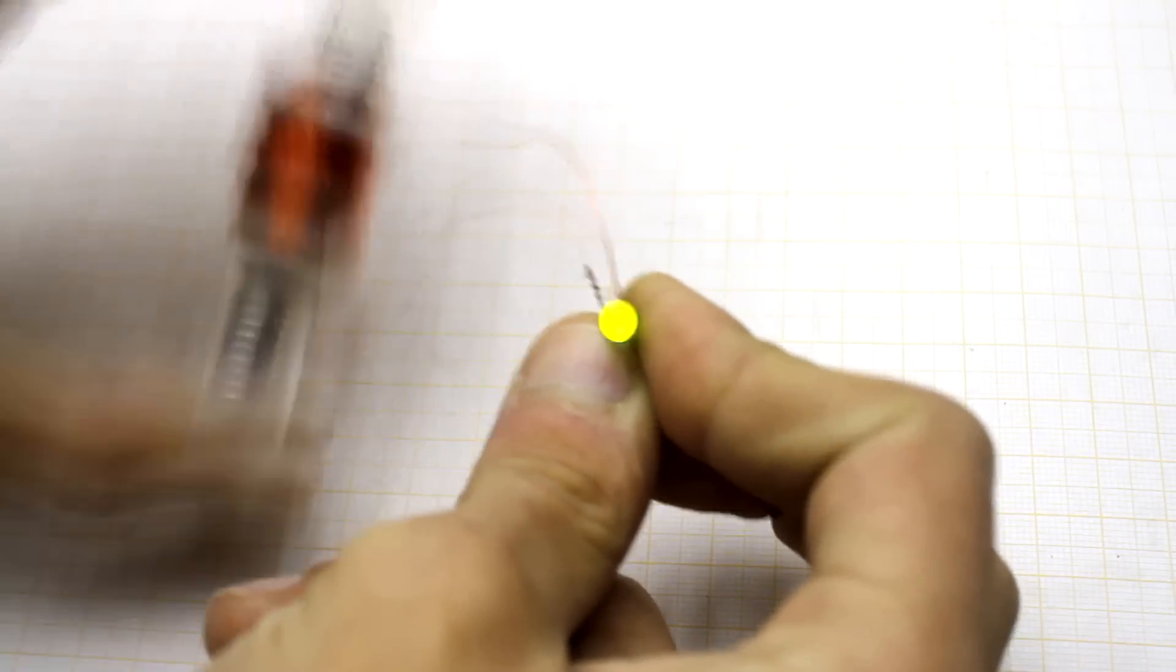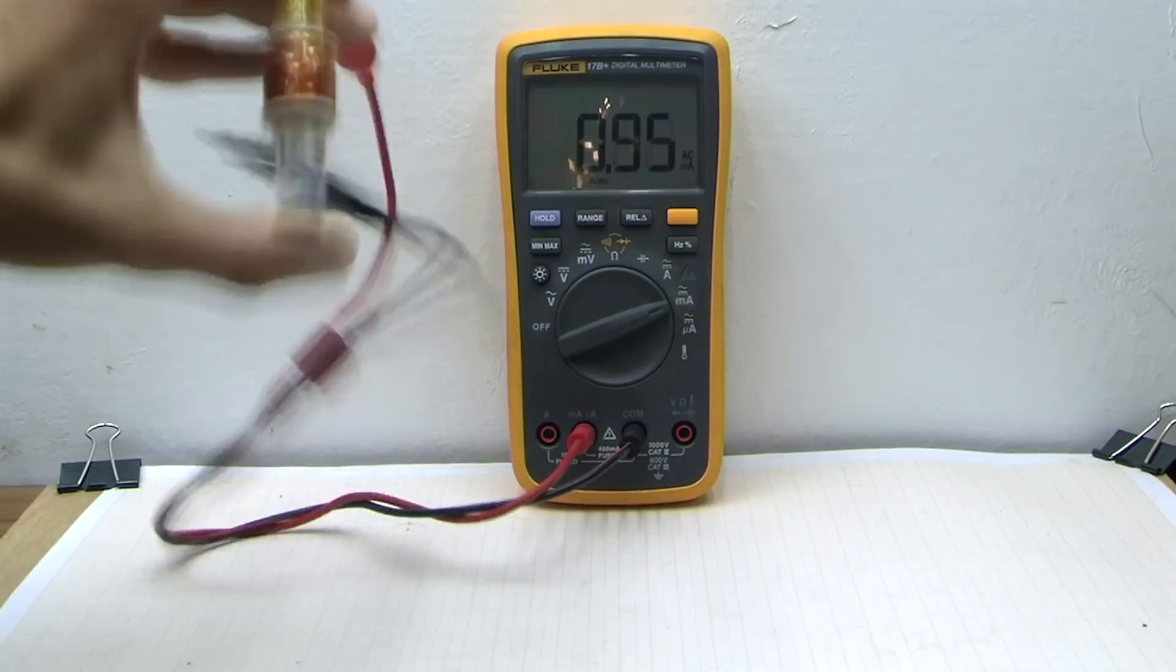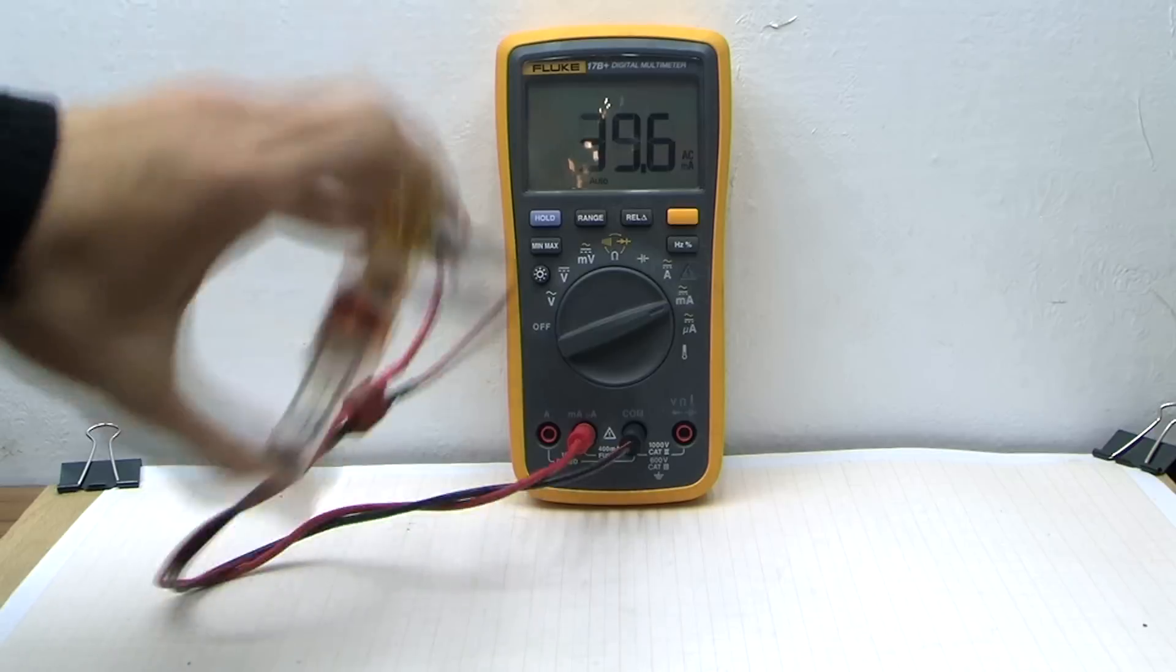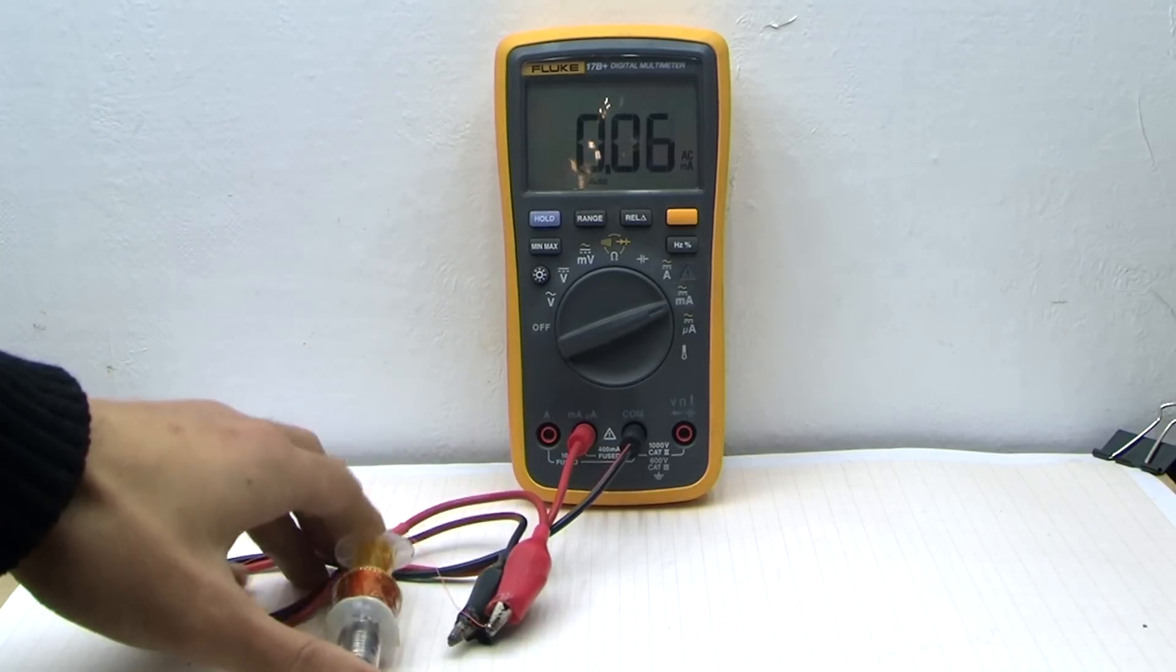If it doesn't work or works worse than expected, don't despair. Just need to remove the magnet and put it with the opposite side, then everything will work as it should. By the way, the maximum current produced by such a generator reaches to 50 mA. It's a pretty high value.